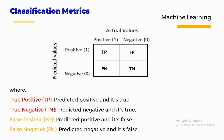True positive means we predicted positive and it is indeed true. True negative means we predicted negative and it is true. False positive is also called a Type 1 error — we predicted positive but it is false. False negative is also called a Type 2 error — we predicted negative but it is false.